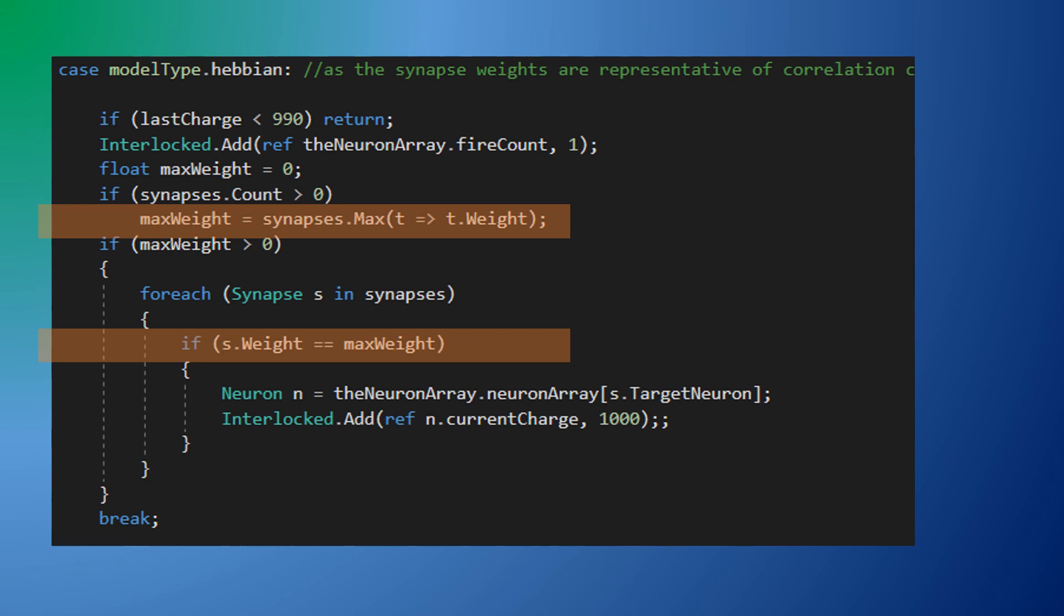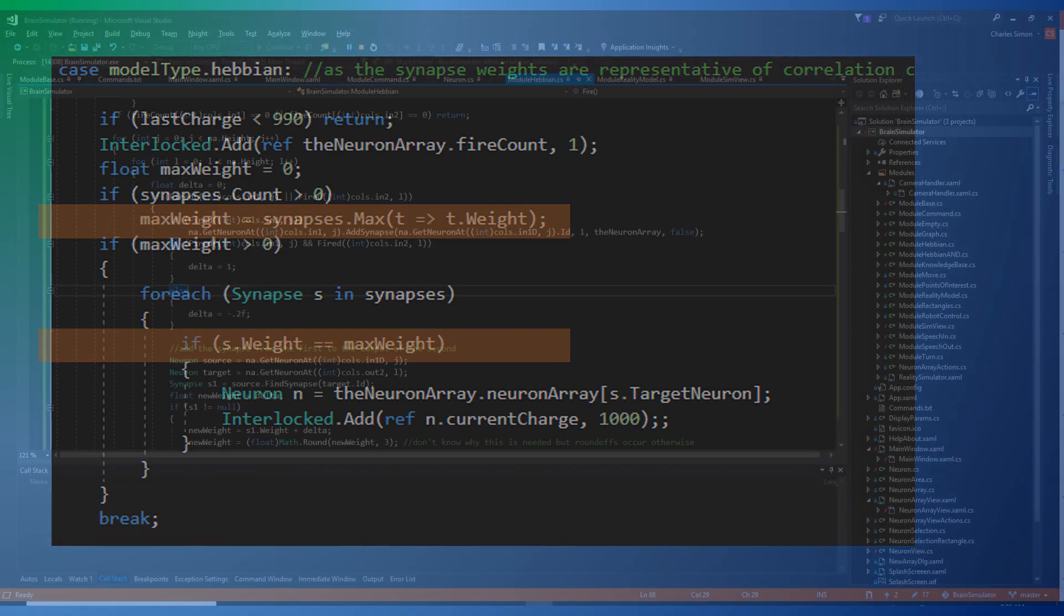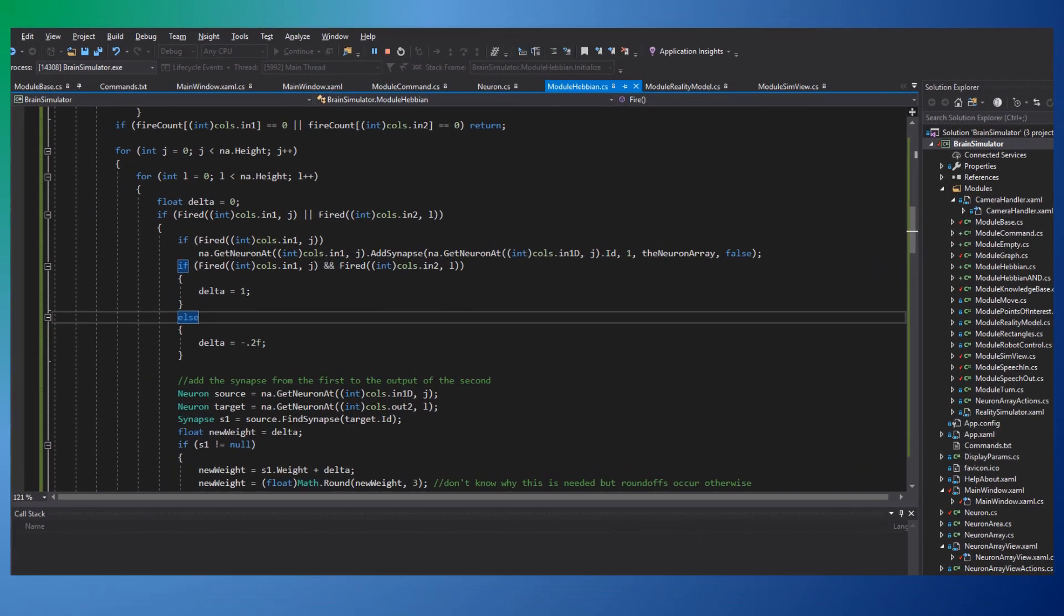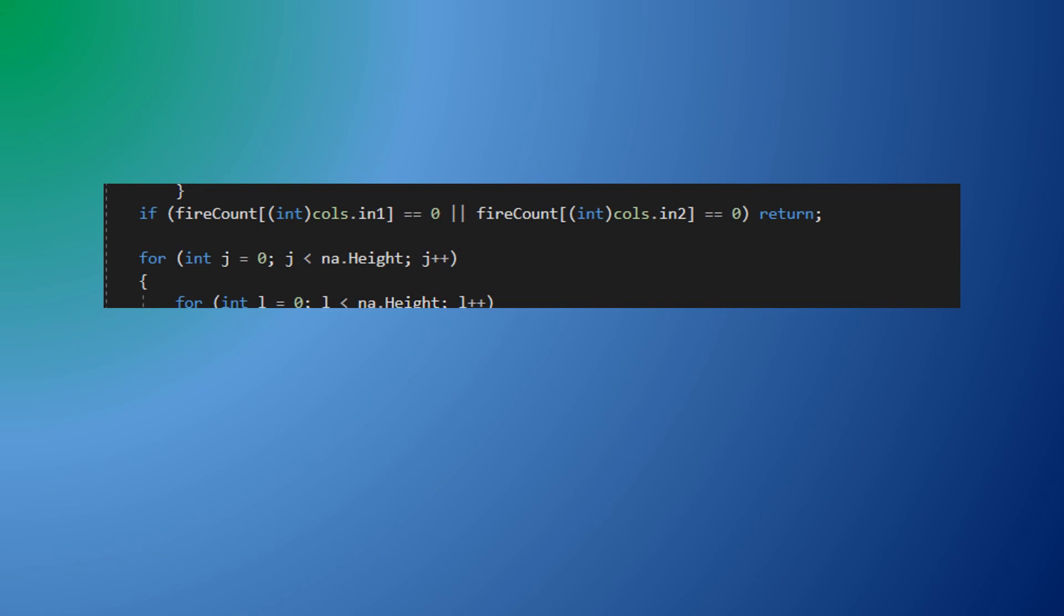How does the network know when it's being trained? Simple. If there are neurons firing on both the right and left input columns then it is learning, adjusting synaptic values.